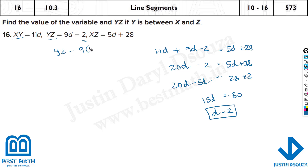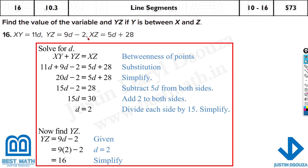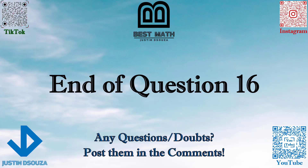YZ is 9 times 2 minus 2, which is 18 minus 2 equals 16. That is the answer. Make sure to look at what is given in the question, substitute accordingly, and you can solve it easily. That's the end of this question — if you have any doubts, re-watch the video or post in the comments.